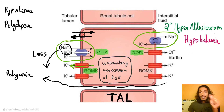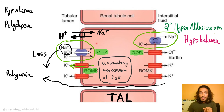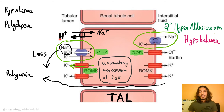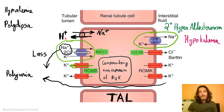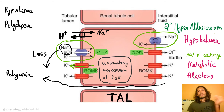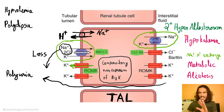In the apical segment, we also have the sodium-hydrogen exchanger. Because the primary transporter is not working, the cell tries to get sodium inside using other transporters. So it will use the sodium-hydrogen exchanger — exchanging sodium for a proton. This results in loss of acid, which causes metabolic alkalosis. The sodium-hydrogen exchanger is the compensatory mechanism responsible for the metabolic alkalosis seen in Bartter syndrome.